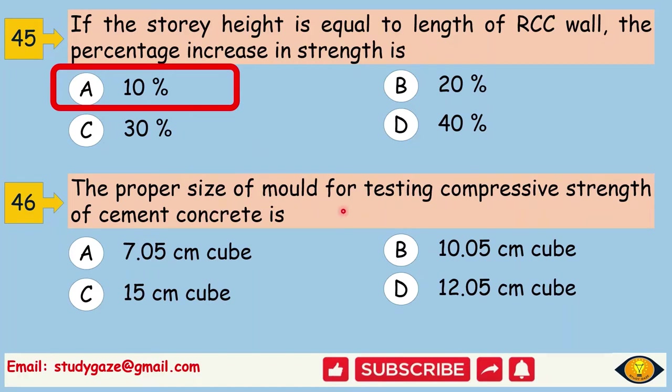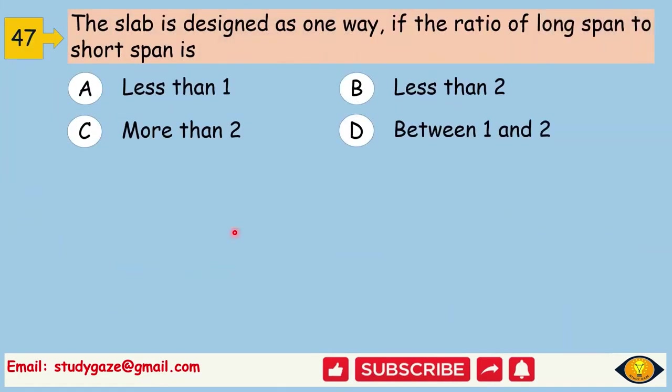The proper size of mold for testing compressive strength of cement concrete is. Answer is 15 cm cube. The slab is designed as one way if the ratio of long span to short span is. Answer is more than two.